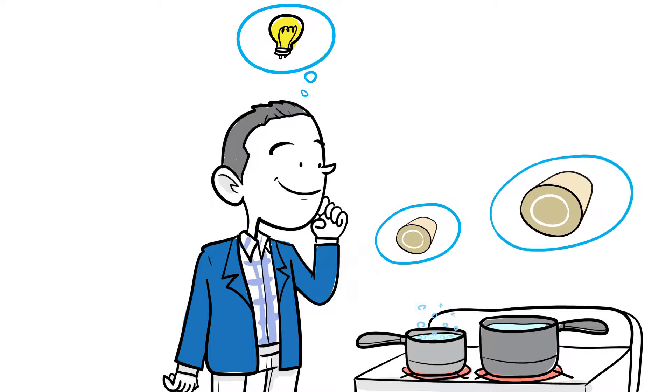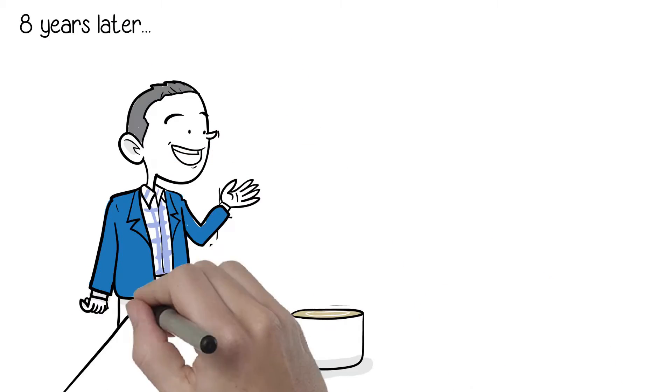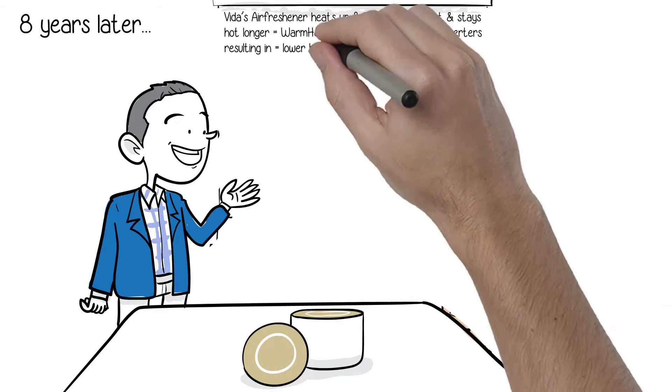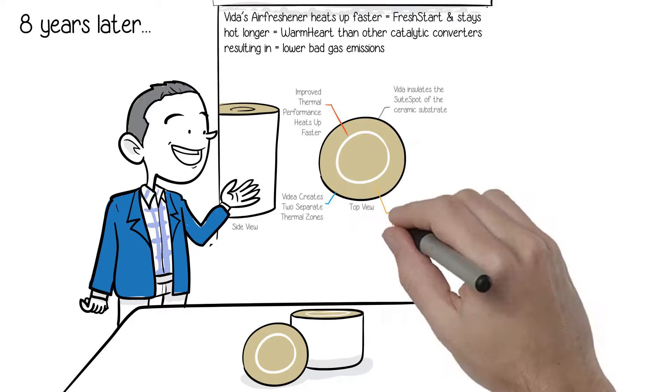If he could make a standard catalytic converter smaller, maybe it would start working faster in the UPS yard. Eight years later, Stef and the Vita team have boiled his air-resistible idea down to the Vita air freshener.